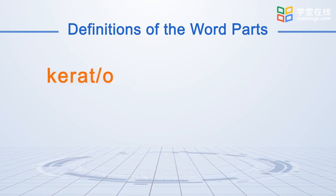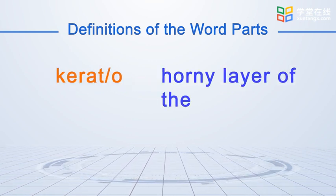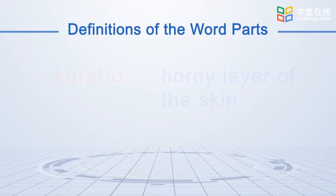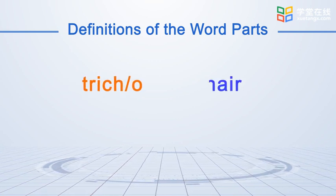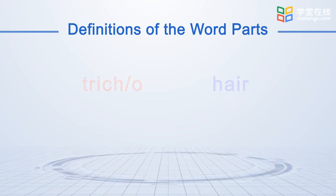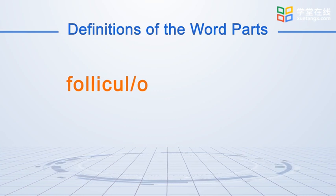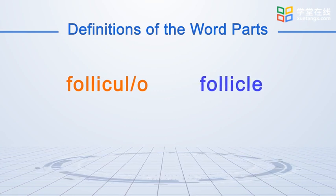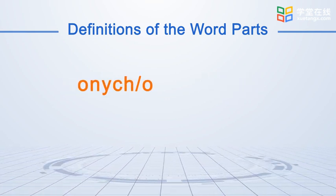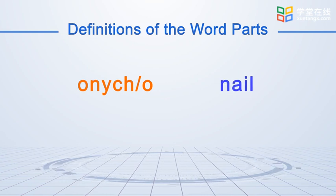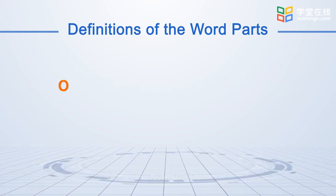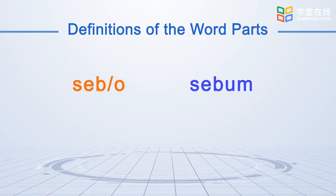Keratal means horny layer of the skin. Tricle refers to the hair. Folliculo refers to the follicle. Arnical is the nail. Sebum means sebum.